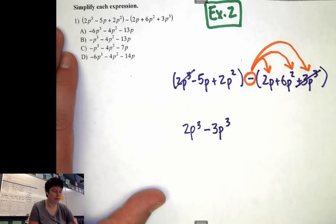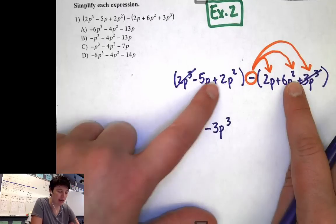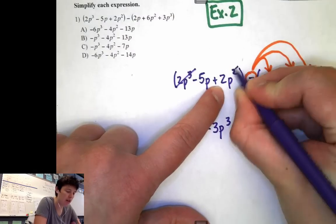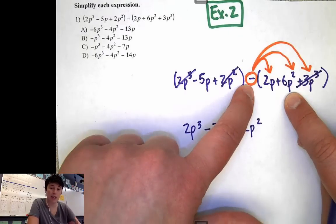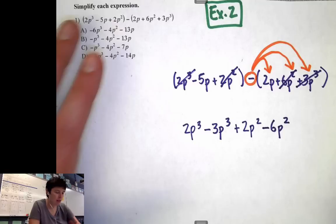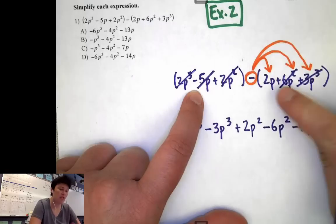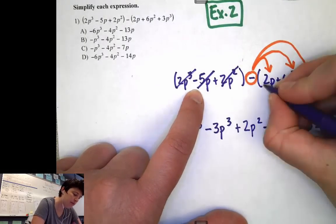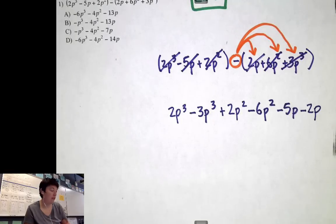I'm going to go through my process of combining like terms. Starting with 2p to the third — highest powers first — which combines with 3p to the third. But remember the subtraction sign, so it's actually a minus 3p to the third. Next, the squared terms: plus 2p squared combines with plus 6p squared, but it's a minus because it distributes, so it's minus 6p squared. Those will combine. And then I'm left with minus 5p and this 2p, which is also a minus 2p.